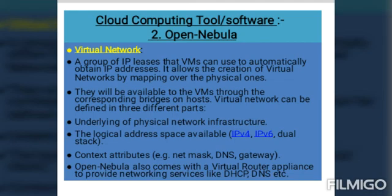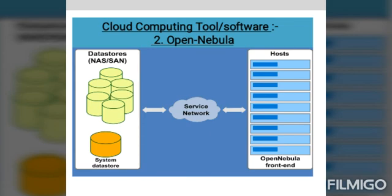A virtual network is a group of IP addresses that virtual machines can use to automatically obtain an IP address. It allows the creation of virtual networks by mapping over the physical ones, making them available to virtual machines through corresponding bridges. A virtual network can be defined in three different parts: first, the underlying physical network infrastructure; second, the logical address space available; third, context attributes. That concludes the overview of OpenNebula software.